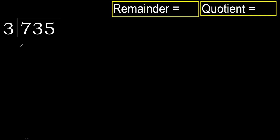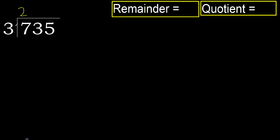735 divided by 3. 7 — 3 multiplied by which number is nearest to 7 but not greater? 3 multiplied by 3 is 9, which is greater. Multiply by 2: 6, which is not greater. Subtract. Next.